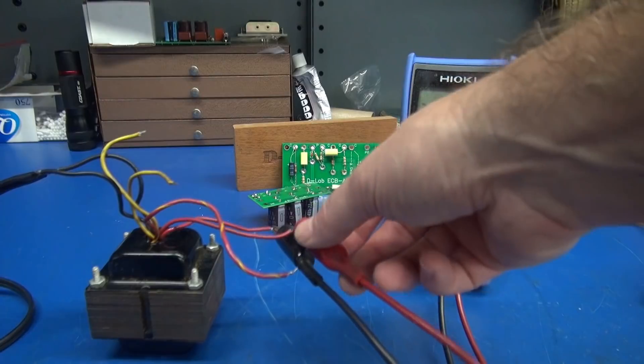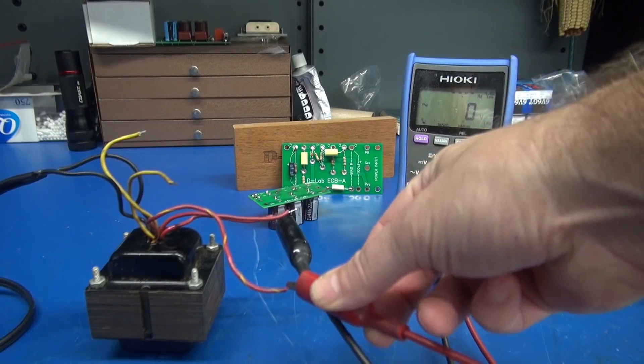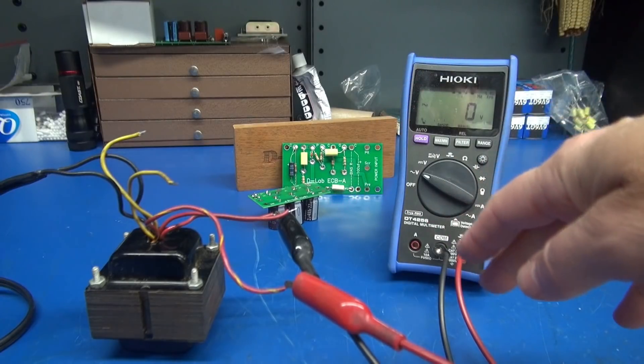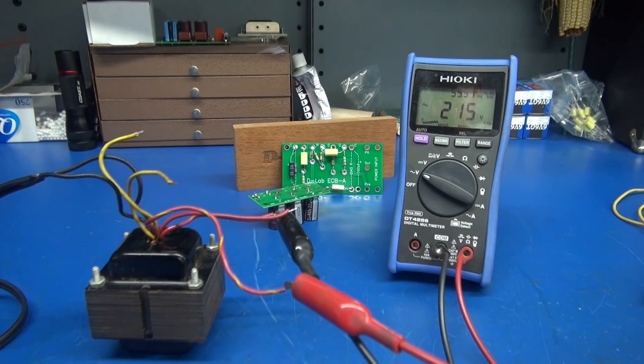Now, I'm going to move one of my leads to the center tap because after we rectify this, that center tap is going to go to ground. That's pretty much how they do it on all these amps. So I'll plug her back in. You can see we've got about 215 volts.